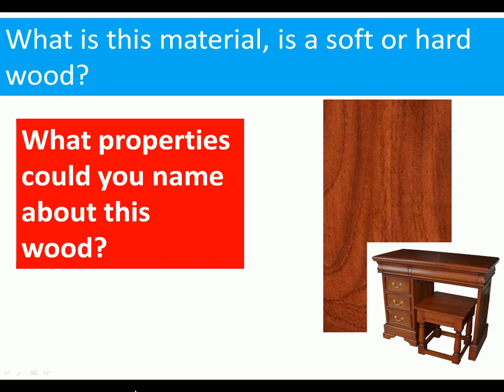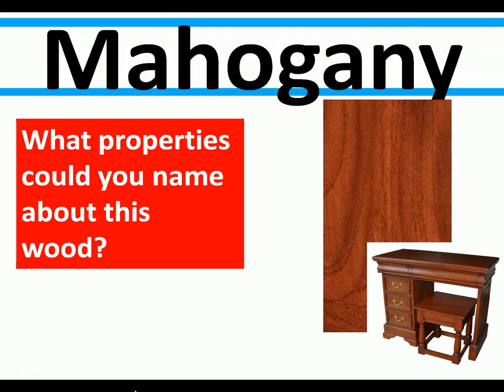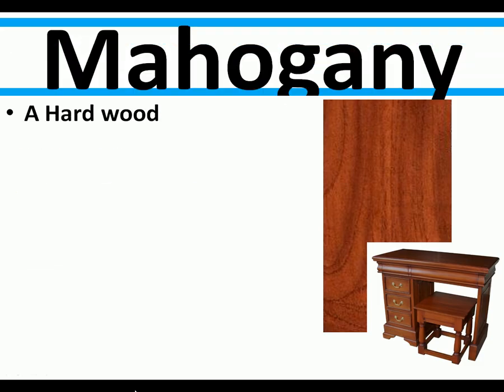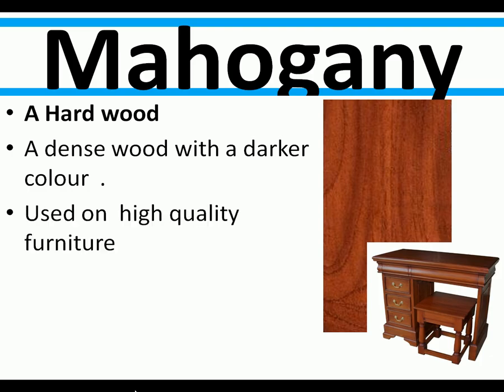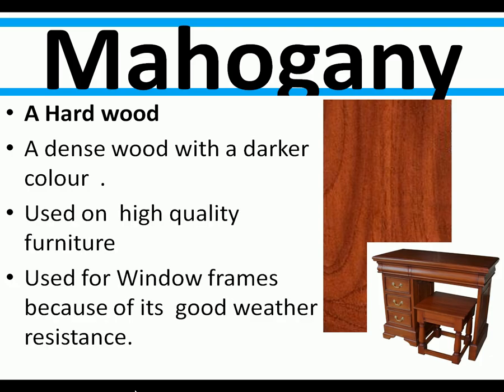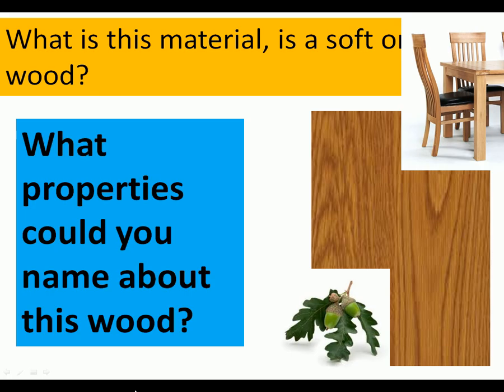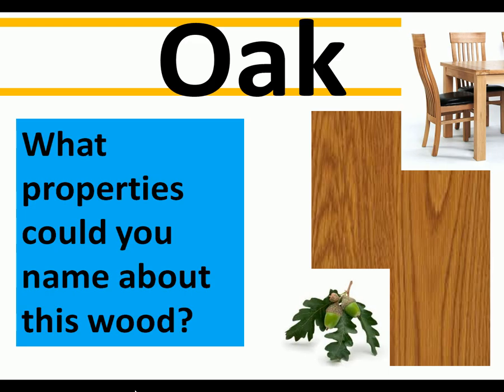The next type of wood is mahogany, a dark-coloured hardwood. It's a dense wood with a darker colour, used for high-quality furniture — there's a desk shown that is made of mahogany. It's also used for window frames because it has good weather resistance due to its natural oiliness, meaning it stays good outside.